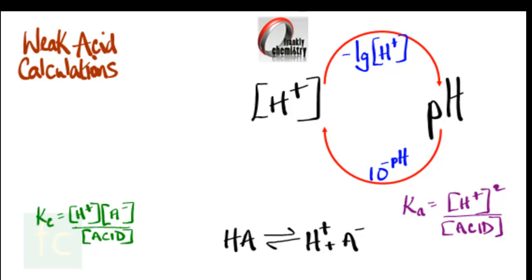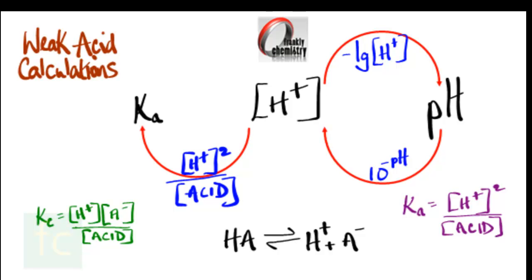You'll see lots of examples of that kind of calculation through this video. Next, how is the concentration of hydrogen ions related to the acid dissociation constant Ka? Ka is equal to the concentration of hydrogen ions squared over the concentration of the acid. Remember that H⁺ and A⁻ in the case of a monobasic acid are produced in equimolar amounts.